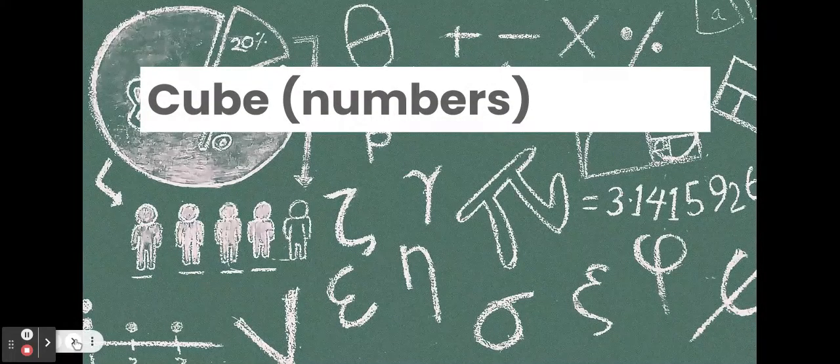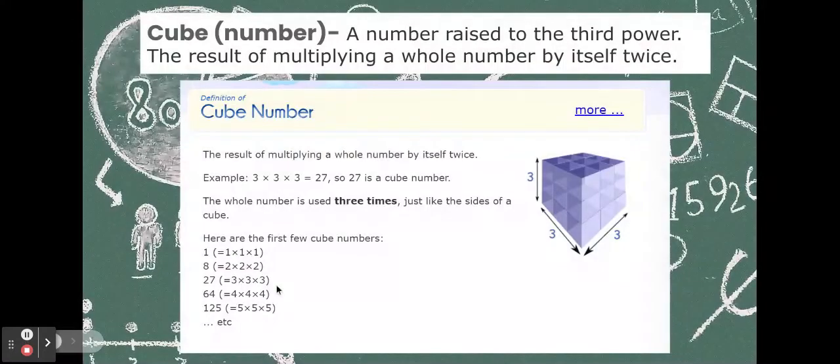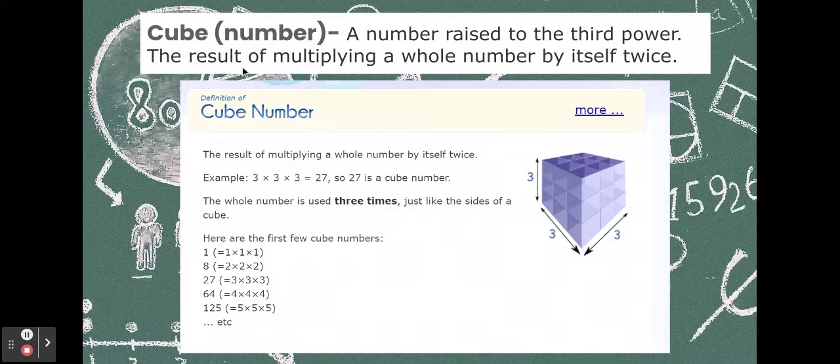Cube. We all have seen a cube before. Cube number is a number raised to the third power. The result of multiplying a whole number by itself twice. So, three to the third power. Three times three times three. Our integer, or whole number in this case, is three. And it's multiplied by itself two more times. But all in all, it's multiplied three. Three times three times three. A number raised to the third power. It's a cube.